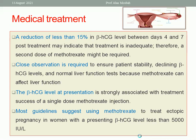Close observation is required to ensure patient stability, as a ruptured ectopic can occur at any time and may cause shock and be life-threatening. The patient must have normal liver function tests before receiving methotrexate, as it has hepatotoxic side effects. Guidelines suggest giving methotrexate if beta-hCG is less than 5000 IU/L.